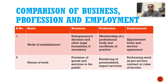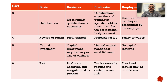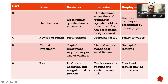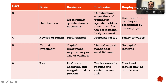Regarding nature of work: business involves provision of goods and services to the public; profession renders personalized expert services — for example, a teacher's nature of work is teaching; employment means performing work as per the service contract or rules of service. Regarding qualification: business requires no minimum or maximum qualification; profession requires qualification, expertise and training in a specific field as prescribed by the professional body; and in employment, qualification and training are prescribed by the employer.